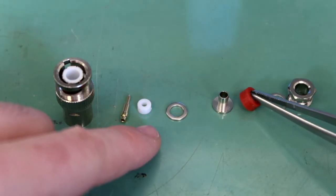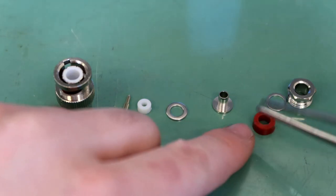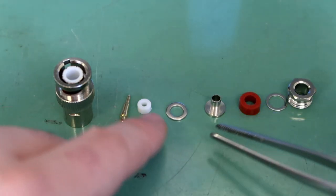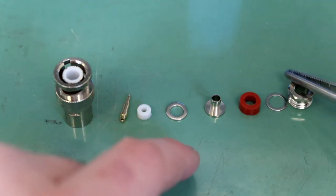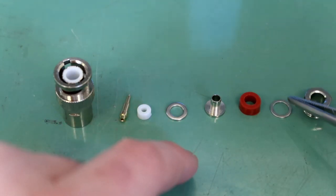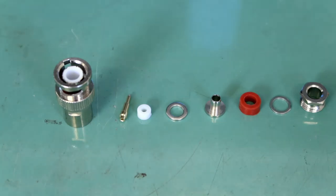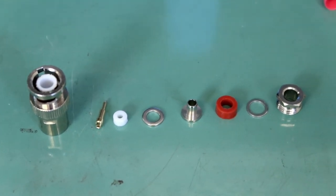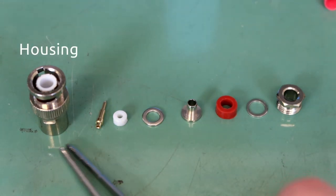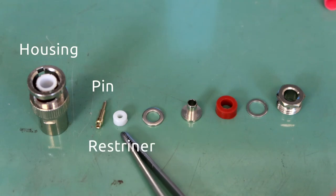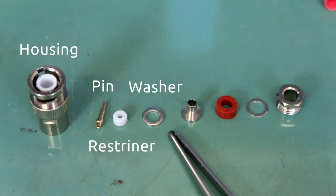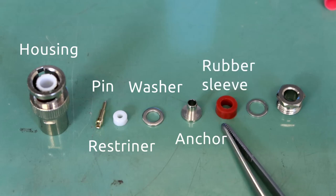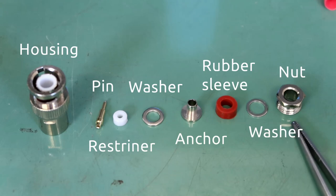This BNC connector is made of 8 parts: the housing, pin, restrainer, washer, anchor, rubber sleeve, another washer, and a nut.